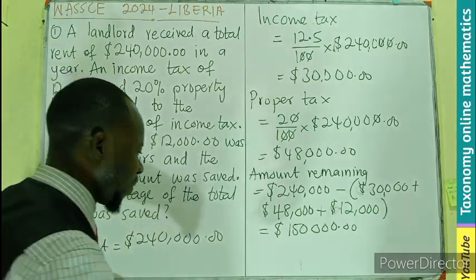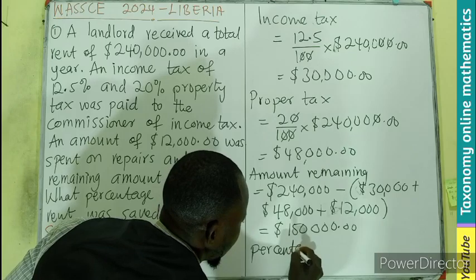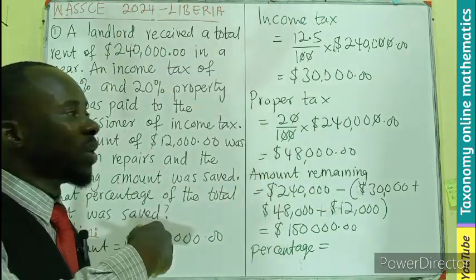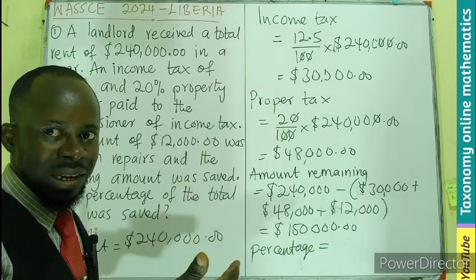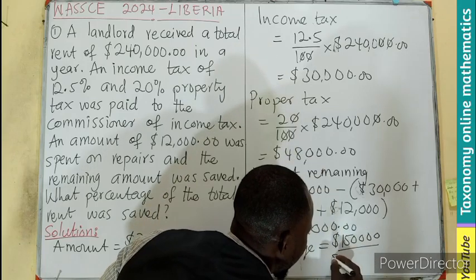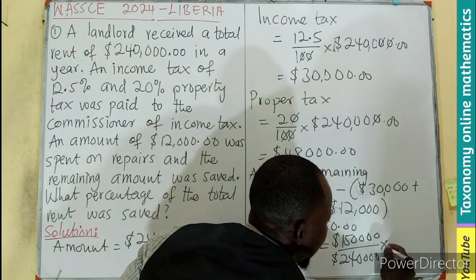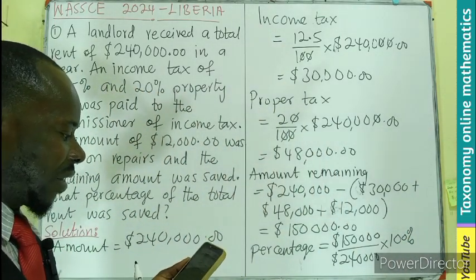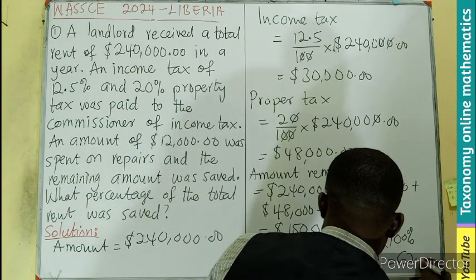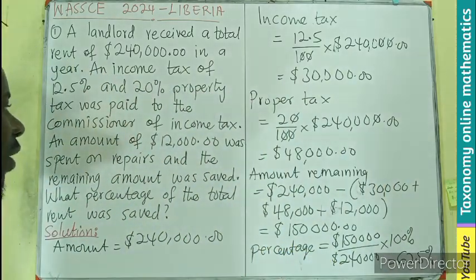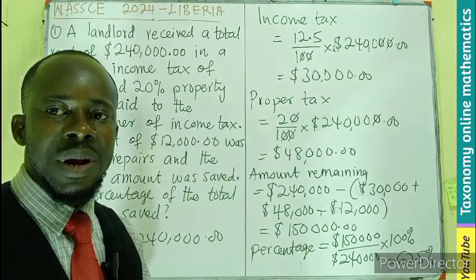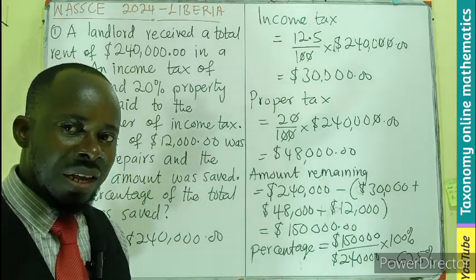To find the percentage saved, we use: percentage = (amount saved / total rent) times 100. So that's $150,000 divided by $240,000 times 100%, which gives us 62.5%. The percentage of money saved from the total rent for that year is 62.5%.